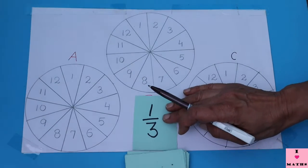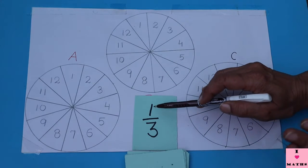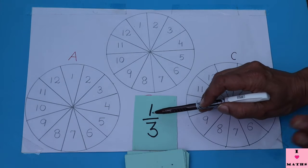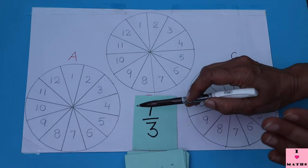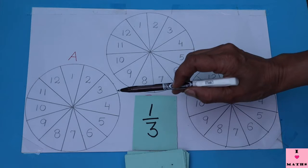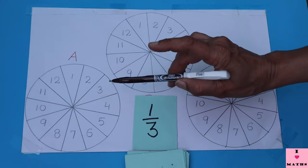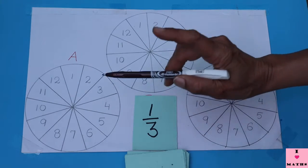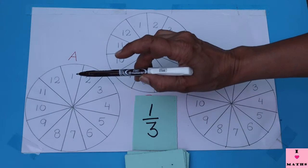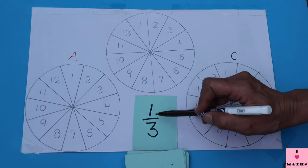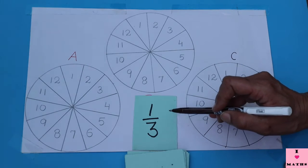Okay, so A has got 1 upon 3. He has to color 1 upon 3 out of 12, so this circle should be divided into 3 equal parts. Since 3 fours are 12, so 4 parts will be colored because 1 upon 3 of 12 is 4.